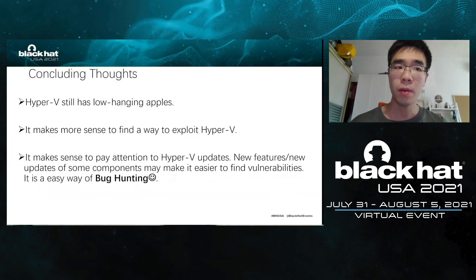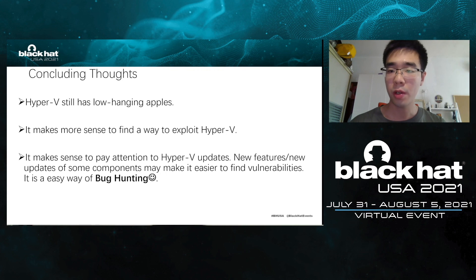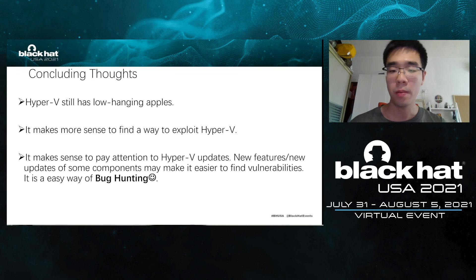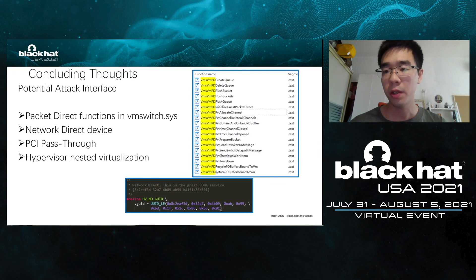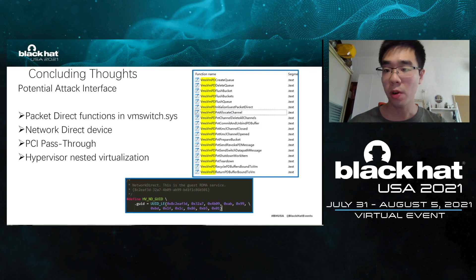Concluding thoughts: there are some thoughts on Hyper-V security research. Hyper-V still has low-hanging fruit because some new vulnerability trigger logic is very shallow, and it makes more sense to develop a working exploit for Hyper-V — a working exploit is far more valuable than just a POC. It also makes sense to pay attention to Hyper-V updates, as new features and updated components make it easier to find vulnerabilities. There are also thoughts on potential attack interfaces: the packet direct function in VMSwitch and SR-IOV direct device are not enabled in the default configuration, which makes them potential attack interfaces. PCI pass-through and nested virtualization are also good research areas since these functions are not commonly used. Thank you for listening.